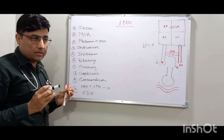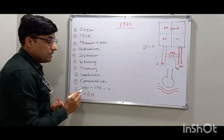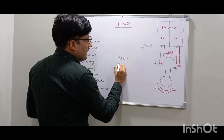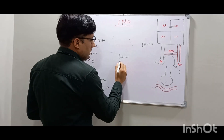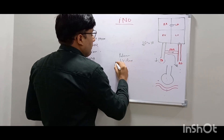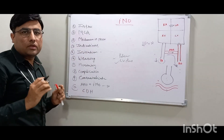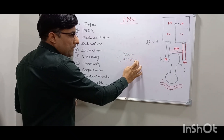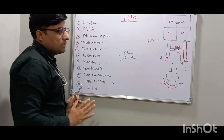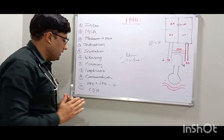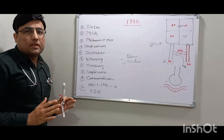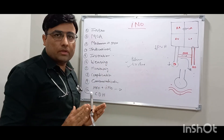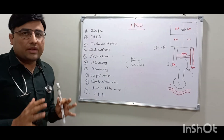Regarding CDH: iNO is generally not effective in congenital diaphragmatic hernia because CDH involves pulmonary hypoplasia, vascular developmental abnormalities, and LV dysfunction. Sometimes iNO can be used if lungs are properly recruited and there is no LV dysfunction, but studies have shown iNO is not very effective in CDH. That concludes our discussion of the practical aspects of Inhaled Nitric Oxide in newborns. Thank you.